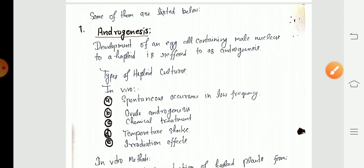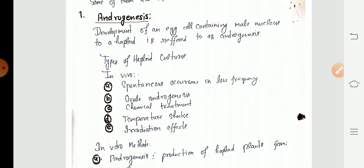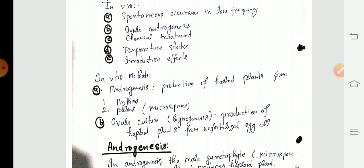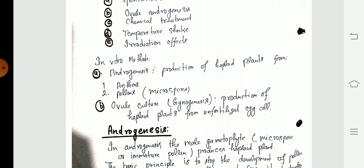I will discuss androgenesis and the in vitro method. There are two processes: androgenesis and gynogenesis. In androgenesis, production of haploid plants occurs through the help of anthers and pollens.